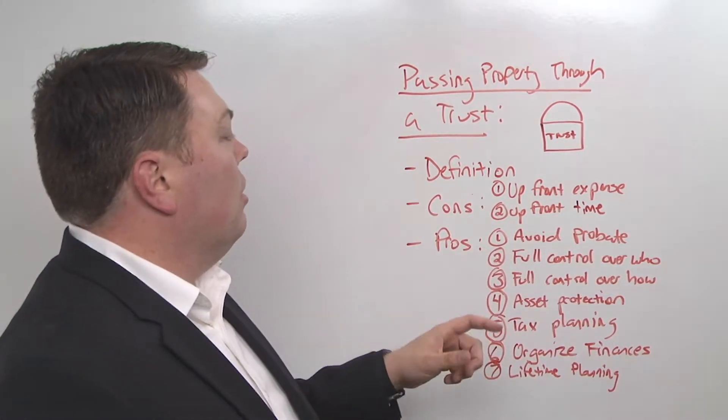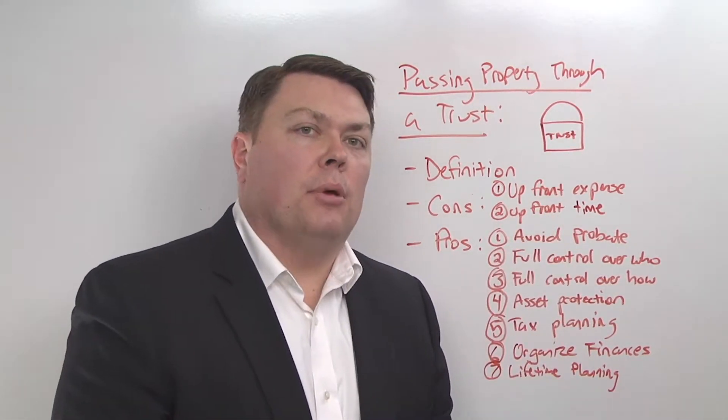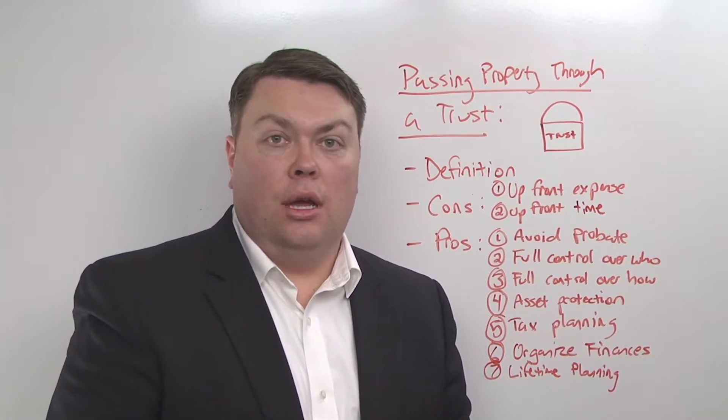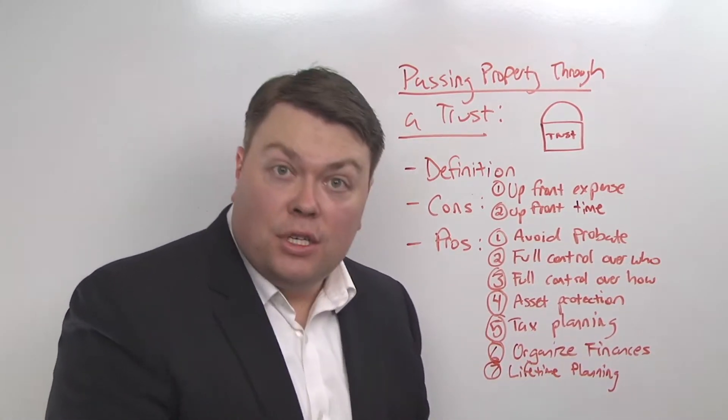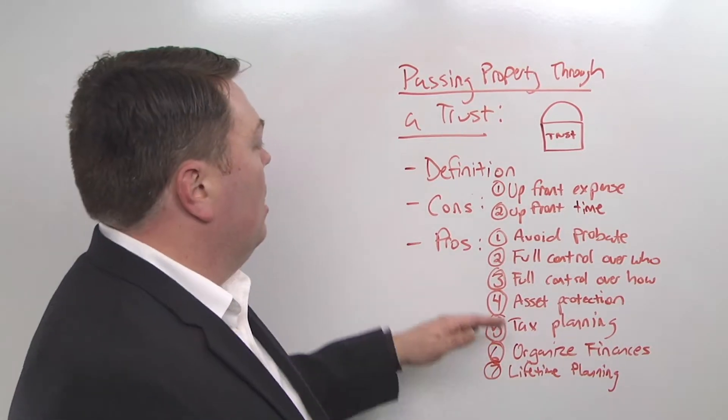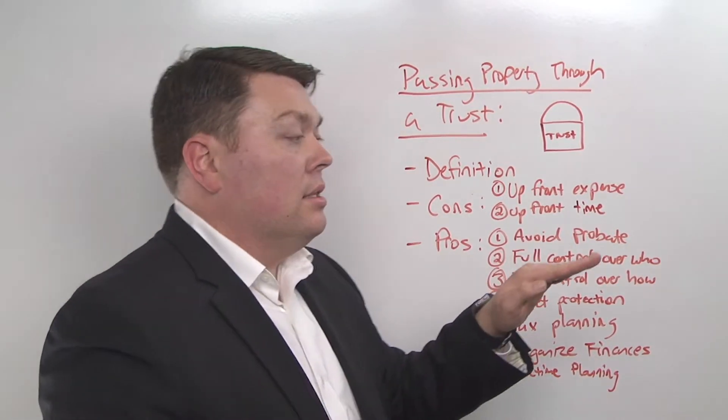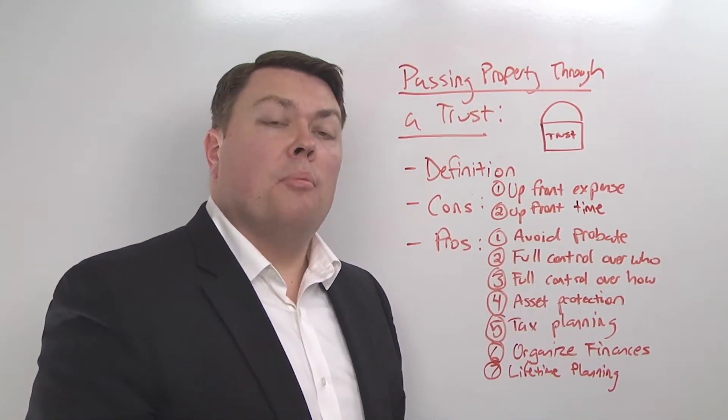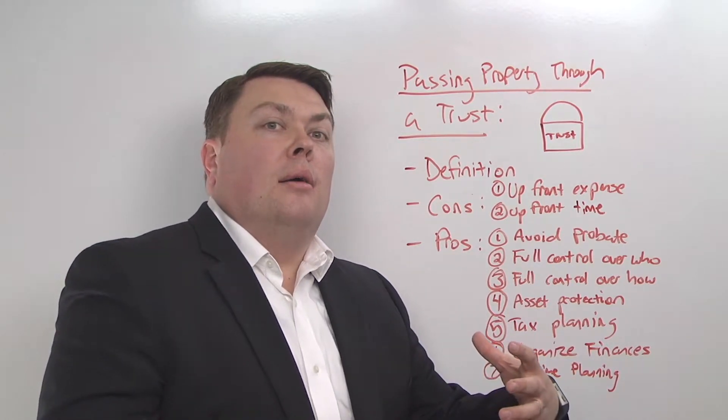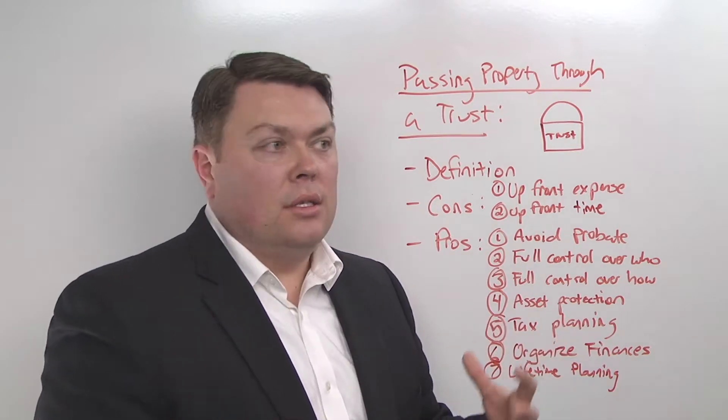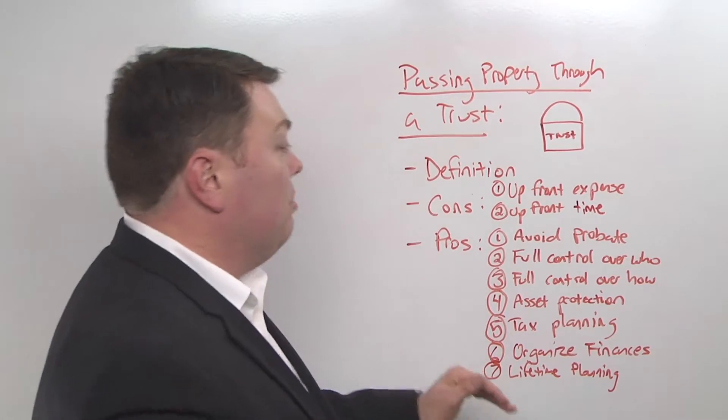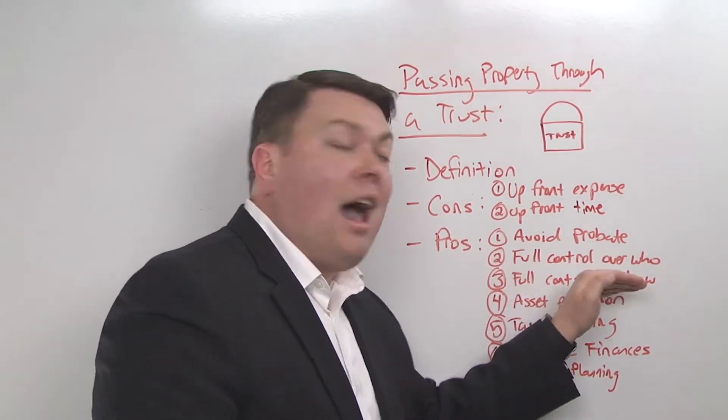Number three, you're in full control over how they get the property. Here we can name people who are going to be in charge of the money, we can name beneficiaries, so these are the people who are actually going to benefit from the trust. And we can stage how they get the property, or we can structure it in ways that maybe your beneficiaries don't agree with, but that you think is best for them. It's your property, so you should be in charge of who gets what and how.